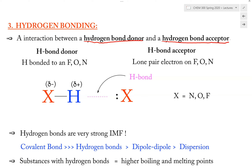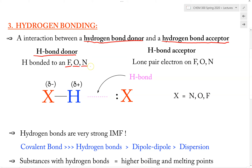Now let's define the Hydrogen Bond donor and the Hydrogen Bond acceptor in great detail to make sure we know how to identify them. A Hydrogen Bond donor is basically a part where we have the Hydrogen that is bonded to a Fluorine, an Oxygen, or a Nitrogen. So only when we have a Hydrogen bonding to one of these atoms — Fluorine, Oxygen, or Nitrogen — does it make up the Hydrogen Bond donor part.